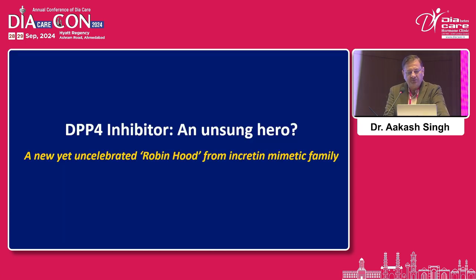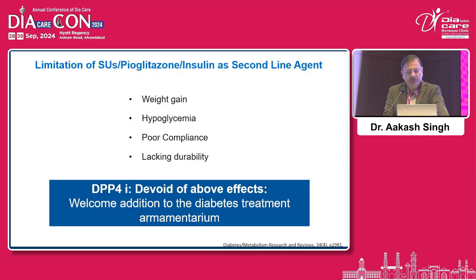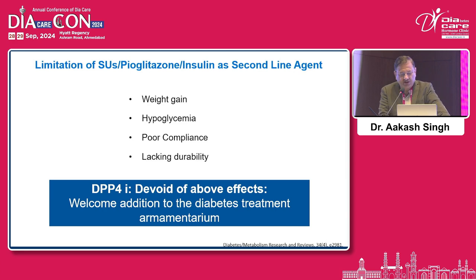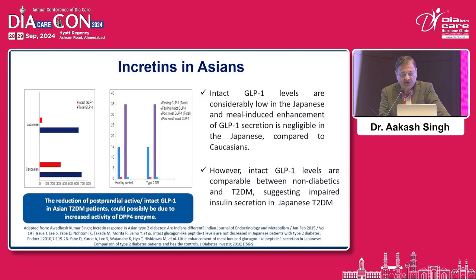DPP-4 — the unsung hero. The limitations of sulfonylureas, pioglitazone, insulin, and other second-line agents are weight gain, hypoglycemia, poor compliance, and lacking durability of action. DPP-4 is a welcome addition to the diabetes treatment armamentarium. What I say is, DPP-4 is like black trousers — you can wear them for any occasion, and they can be combined with any drug.